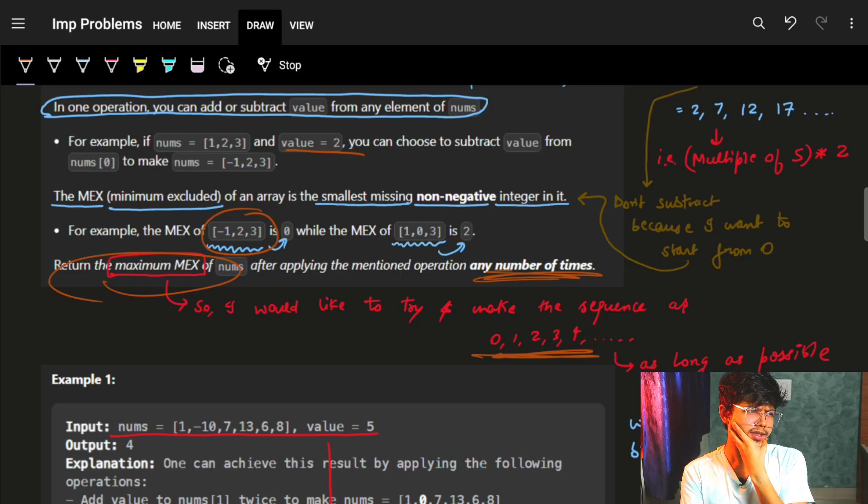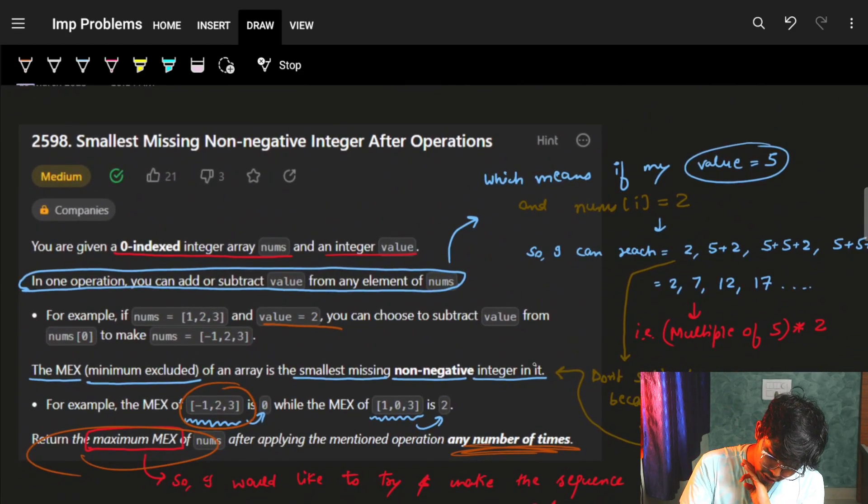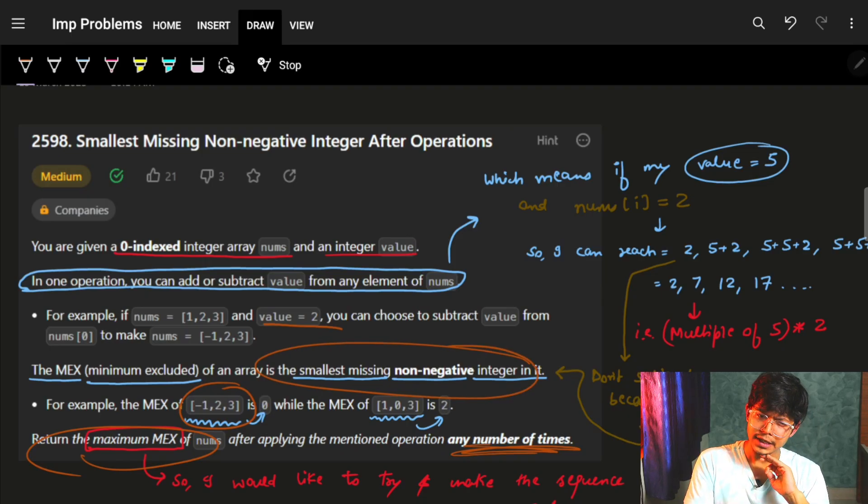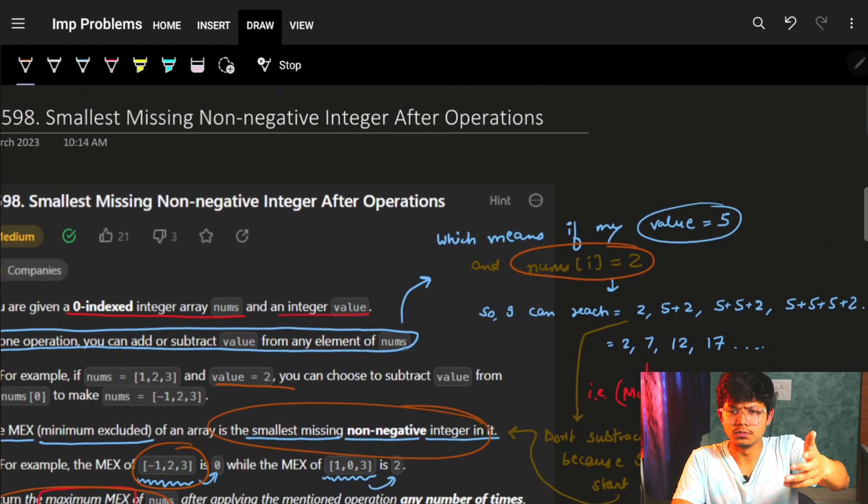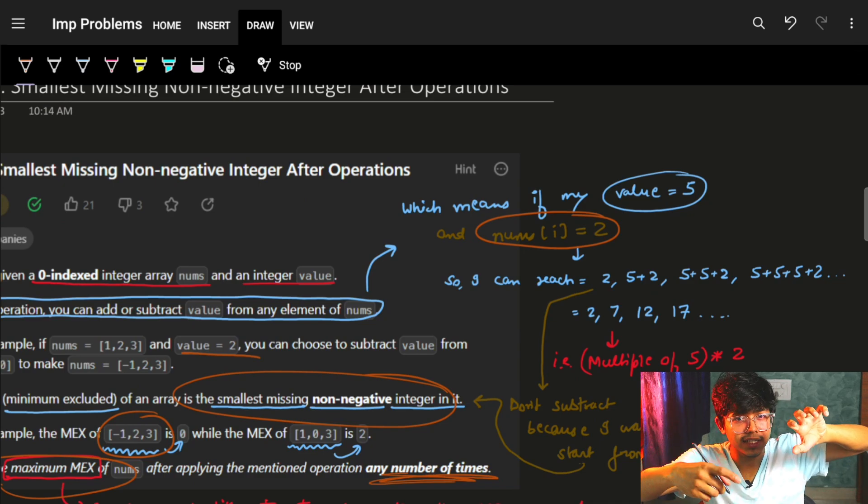This means I have to make it 0, 1, 2, 3, 4. But before you can easily also see one thing. If we have the operation of adding and subtracting my value any time. So if I have this value, let's say 2, my value of nums[i] is 2, I can add or subtract any time, any number of times.